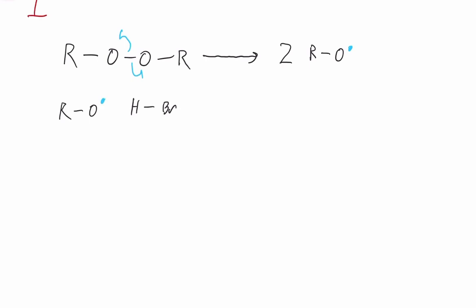Still part of the initiation step, that free radical will then react with the HBr like this. Remember that each line represents an individual electron because we're using fish hooks. And that will give us the most important component in our solution, at least for now, which is this free radical bromine atom.